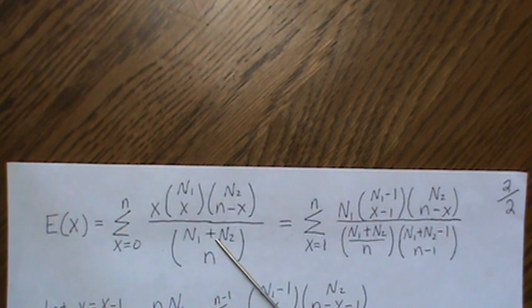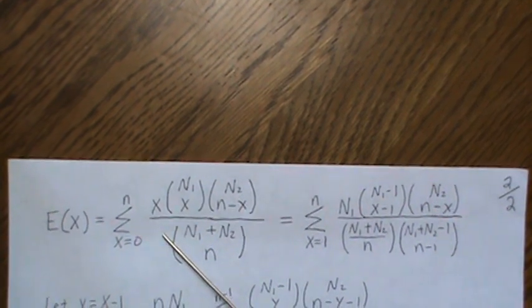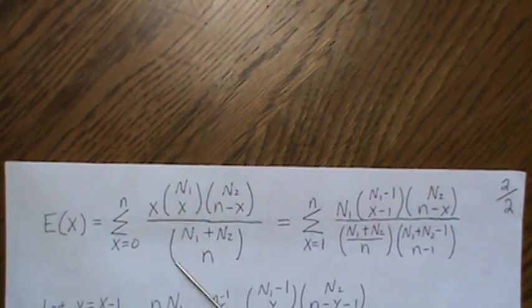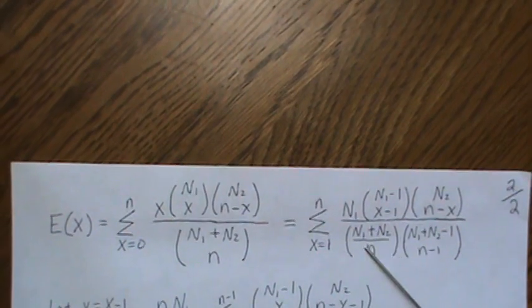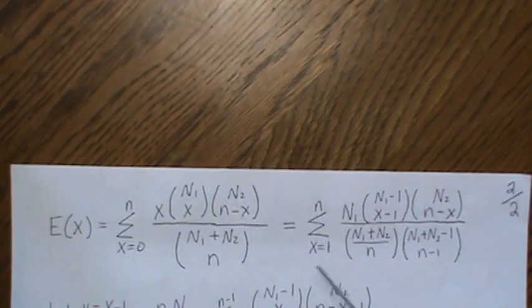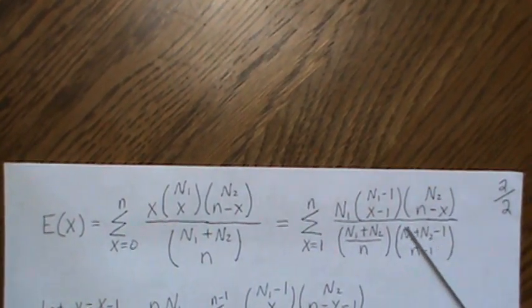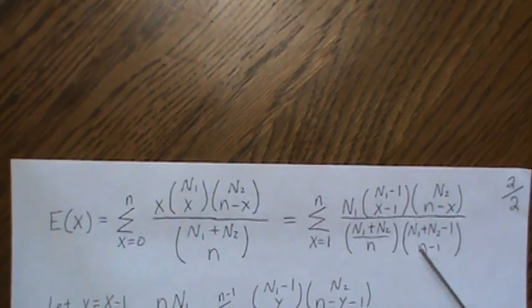Now this piece here, we factor out an N1 plus N2 and an N, and actually it becomes a fraction. And then this piece here is equal to this. So this is combinations, and this is a fraction.